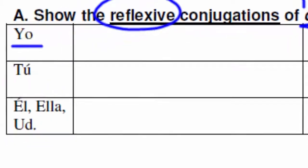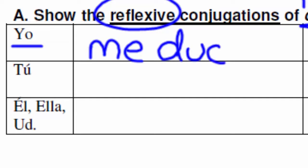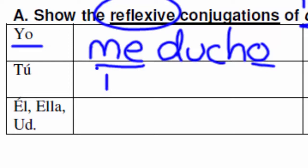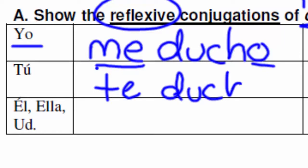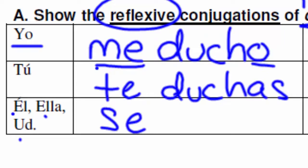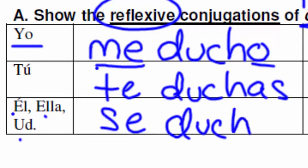If you want to say 'I shower myself,' that reflexive pronoun changes to me. So: yo me ducho. Ducho because it's the regular yo form; me because of 'myself.' Tú te duchas — you shower yourself. That's the tú form. Now we've got él and usted: se, and the conjugation there would be ducha. Él se ducha, ella se ducha.